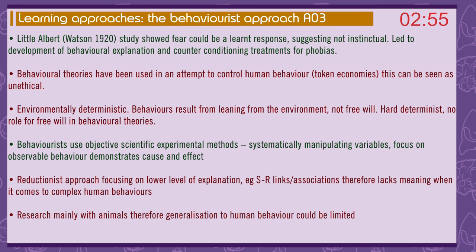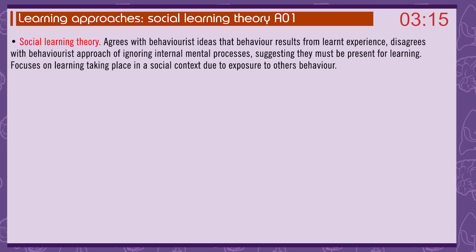Behaviourists use objective scientific experimental methods, systematically manipulating variables and measuring observable behaviour, which demonstrates cause and effect. This is an environmental reductionist approach, focusing on a lower level of explanation — stimulus-response links or associations — therefore lacking meaning when it comes to complex human behaviours. Research was mainly with animals, so generalisation to human behaviour is limited.